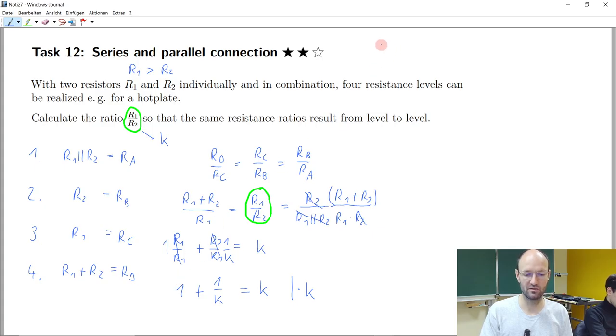So then we get one multiplied with K is K. One over K multiplied with K is one. And on the other side, we have K squared. And so this looks like some quadratic equation and we can rearrange it in a way that we say, zero is K squared minus K minus one.